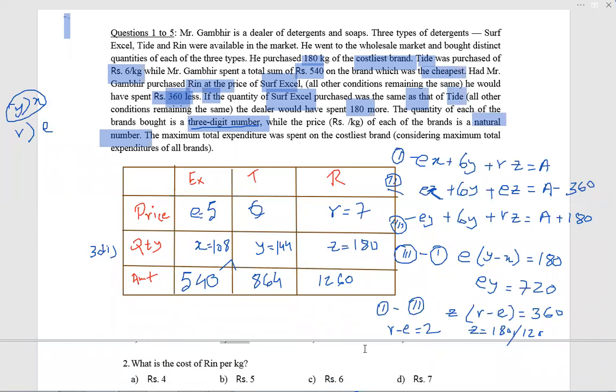Next problem: cost price of Rin. You can see rupees 7, option D.